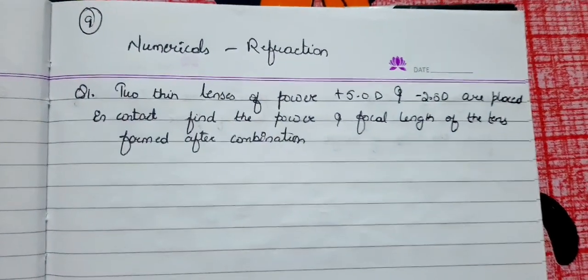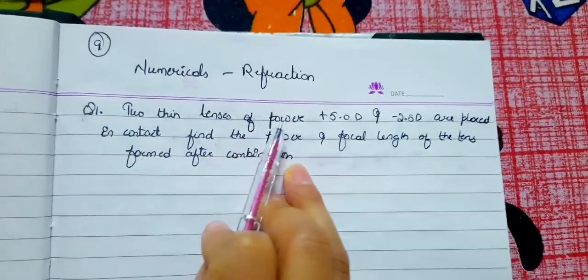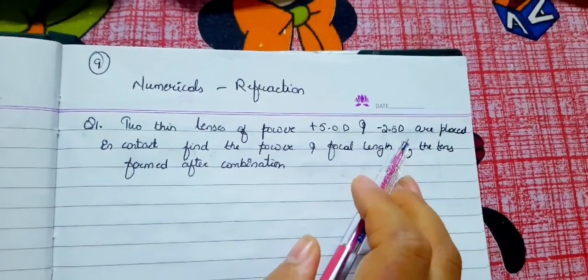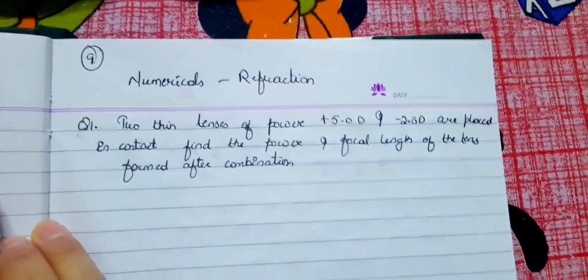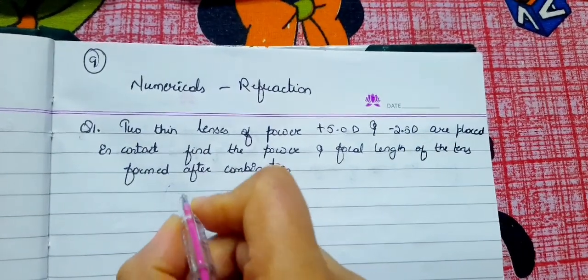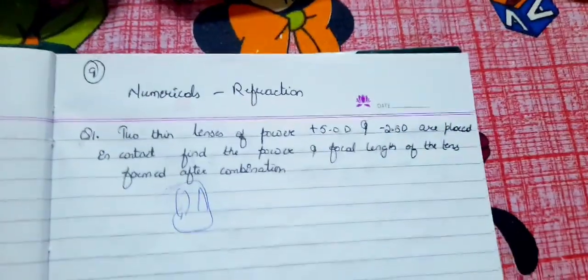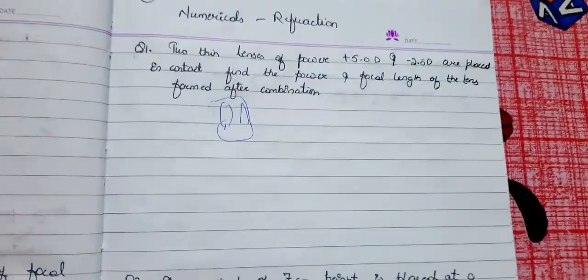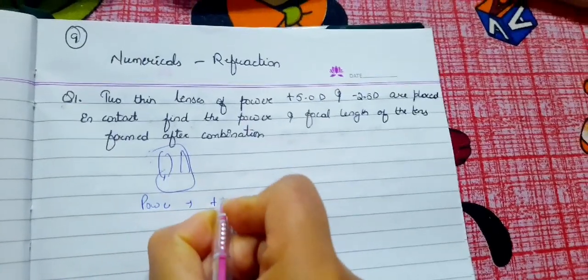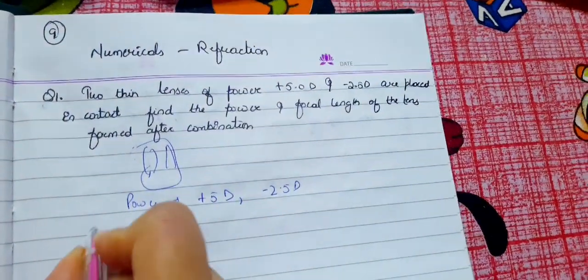Hello, good evening students. Let's begin with numericals on reflection. The first numerical: two thin lenses of power +5 diopter and -2.5 diopter are placed in contact. Find the power and focal length of the combined lens. We have two lenses in combined state. The net power is the sum of both powers. We have P1 = +5D and P2 = -2.5D.